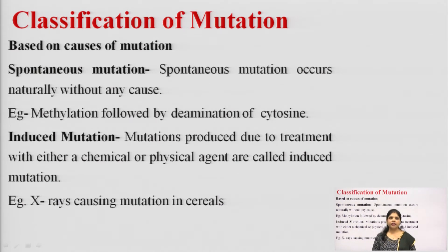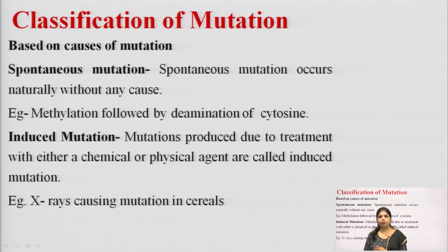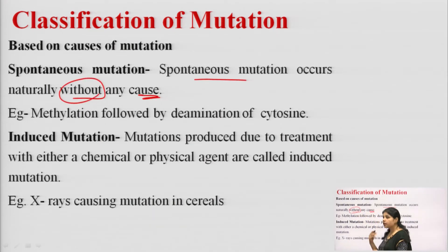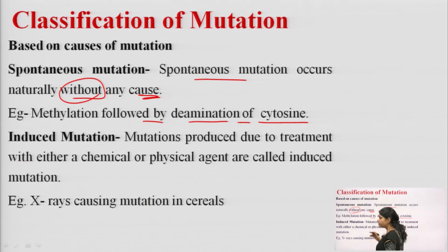The classification of mutation based on causes includes spontaneous mutation and induced mutation. Spontaneous mutation occurs naturally without any cause or reason. An example of spontaneous mutation is methylation followed by the deamination of cytosine, which causes mutation. That kind of mutation is known as spontaneous mutation.